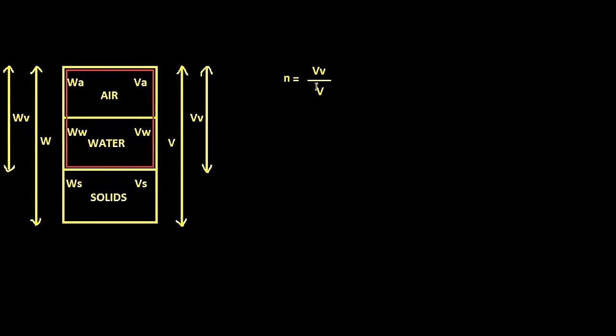So it means it is the ratio of volume of the region under this rectangle to the total volume. Now don't get confused with porosity and void ratio, because porosity is volume of voids by total volume, where void ratio E is equal to volume of voids by volume of solids.